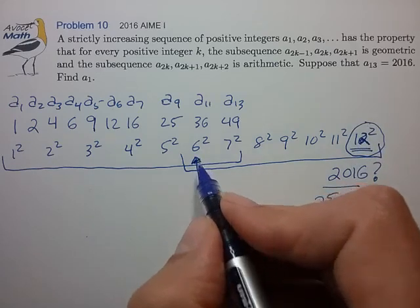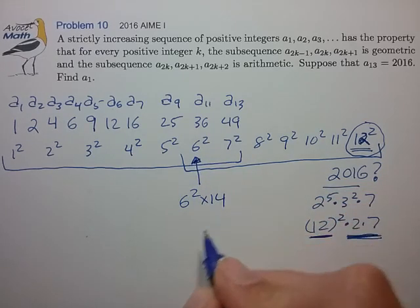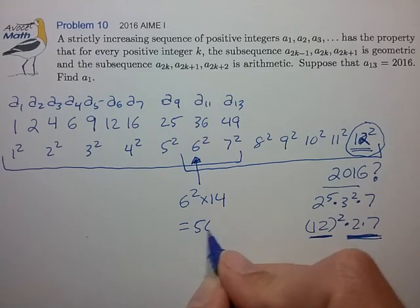So our starting point then would be 6 squared times our scale factor of 14, and that's equal to 504.